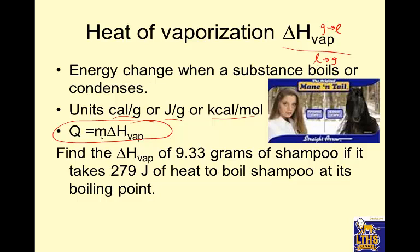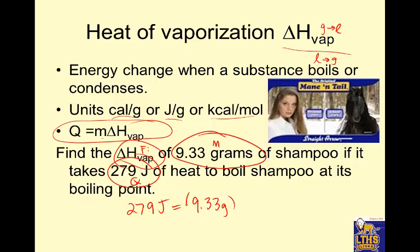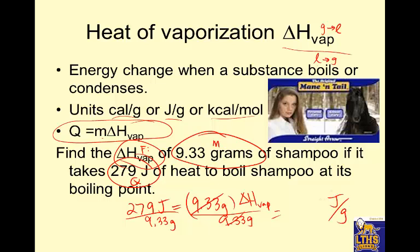When Q equals mass times heat of vaporization, we can find delta H vaporization given mass in grams and heat in joules. Plugging in: 279 joules equals 9.33 grams times the heat of vaporization. To isolate it, we divide both sides by 9.33 grams, giving units of joules per gram. Dividing that out, we get 29.90 joules per gram — that's the delta H vaporization of that same shampoo.